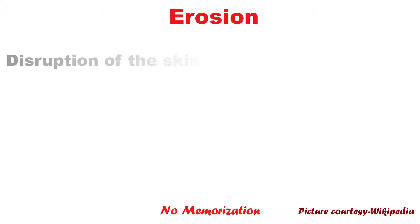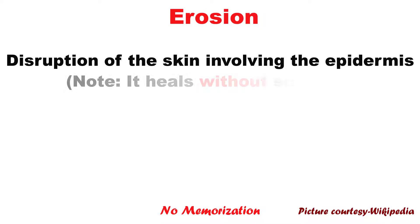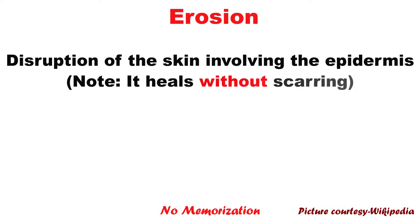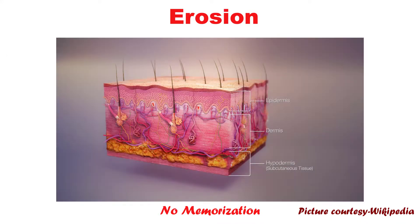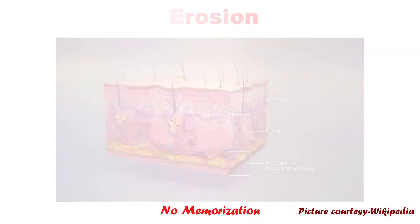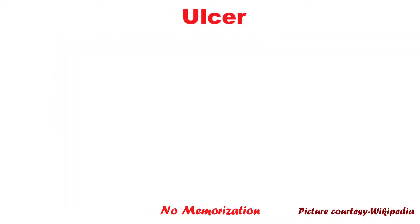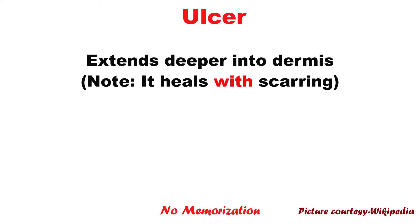Erosion. It is a disruption of the skin involving the epidermis alone and it heals without scarring. In case you forgot the anatomy of the skin, here you can see all the skin layers: epidermis, dermis, and subcutaneous tissue. Now the ulcer. Ulcer is similar to erosion but it extends deeper into the dermis. Unlike erosion, it heals with scarring.